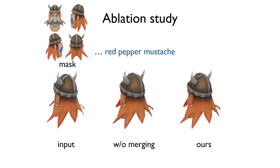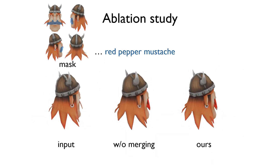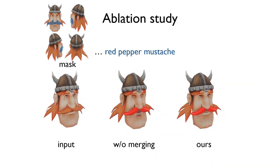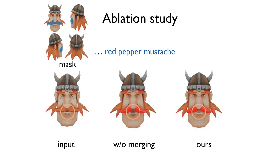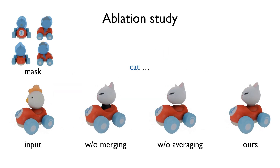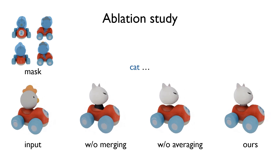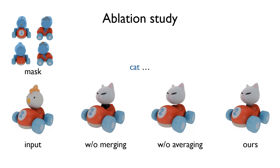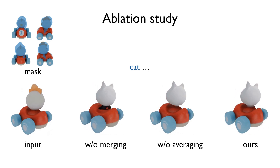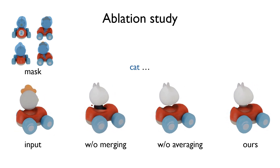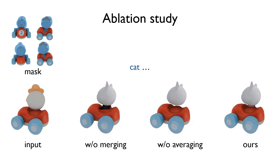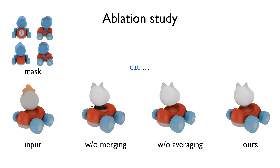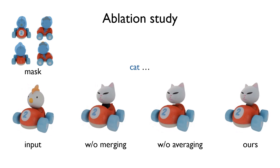Our merging algorithm maintains original shape properties while seamlessly integrating edited regions, as can be seen in the mouth region. Without any merging, editing the cat can alter other parts of the shape. We can keep the original shape structure with simple copy-paste merging, but this leaves a gap. With our approach, we can blend the newly edited region smoothly with the rest of the shape.